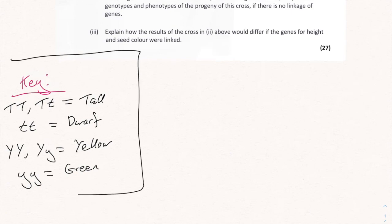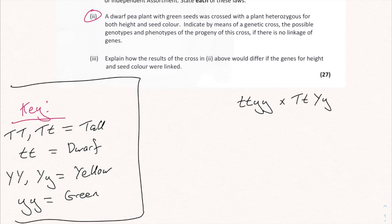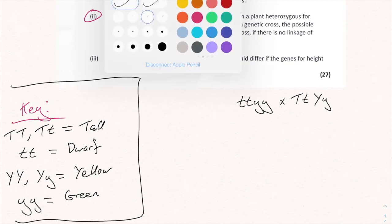Now let's figure out the parent genotypes. A dwarf pea plant with green seeds has to be two small t's and two small y's — that's one parent. The second parent is heterozygous for both height and seed color, so that's straightforwardly capital T lowercase t capital Y lowercase y.